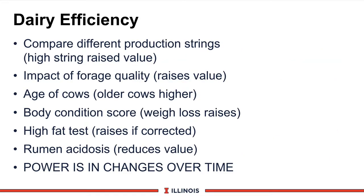Dairy efficiency is used to compare differences between productive strings, as we did in the Wisconsin herd. Generally, the high fresh group will have the highest efficiency, and it will drop off in late lactation because cows are partitioning nutrients to weight gain, pregnancy, and other biological functions. Forage quality is critical — the higher the quality, the greater digestibility, and the better this number will look. On extremely high quality forages, you can approach 1.6 and 1.7 values. Age of cows makes a difference because of less growth requirements. Cows losing weight will look better on paper, but when gaining weight, dairy efficiency drops off. Rumen acidosis will also change dairy efficiency. Track it on your herd or groups of cows and see how it changes over time, days in milk, and when other cattle come into the herd.